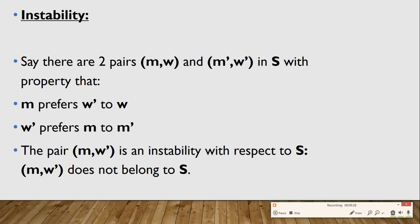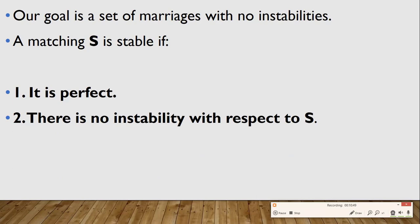The last terminology is instability. Say there are two pairs (m, w) and (m', w') in S with the property that M prefers W' to W and W' prefers M to M'. Then the pair (m, w') is an instability with respect to S. Note that 'with respect to S' is the important keyword here — the pair (m, w') creates an instability because it does not belong to S. Our goal is to find a set of marriages with no instability. A matching S is stable if it is a perfect matching and there is no instability with respect to S.